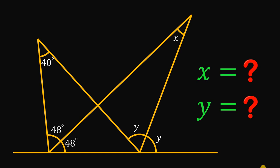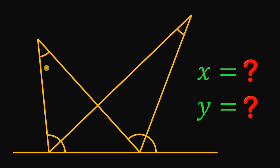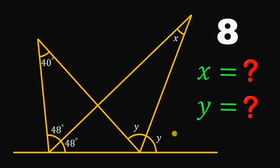For today's video, we will answer a geometry challenge given by one of our followers. The question goes like this: given this figure, this angle right here must be 40 degrees, this angle right here is 48 degrees, and this angle right over here is 48 degrees also. This angle is represented as X, and this angle is Y and Y. Now the question is, what is the angle measure of X and Y? You can pause this video if you want to give this problem a try.